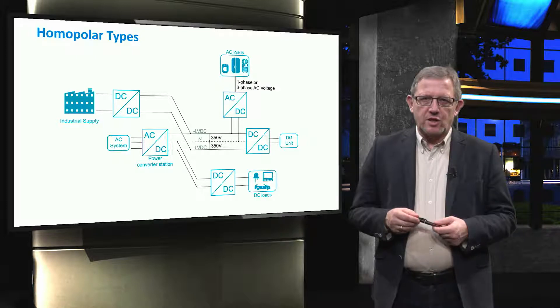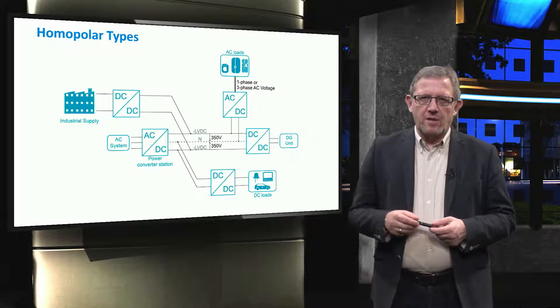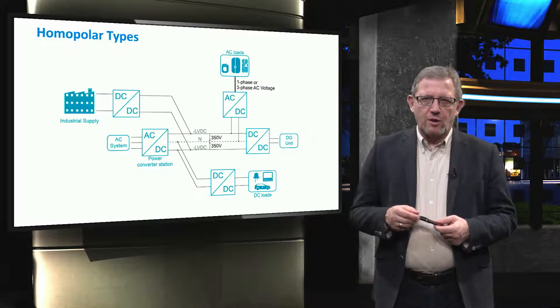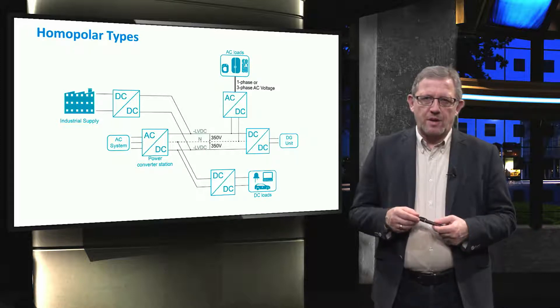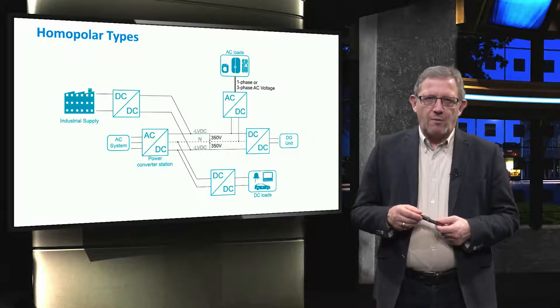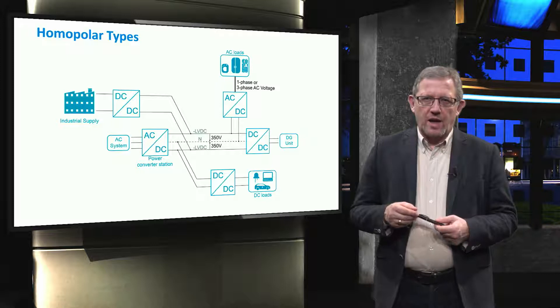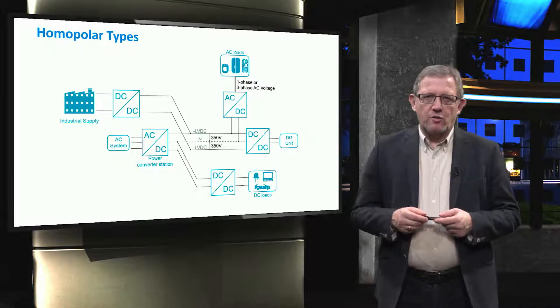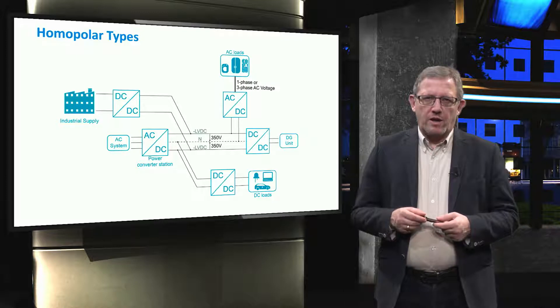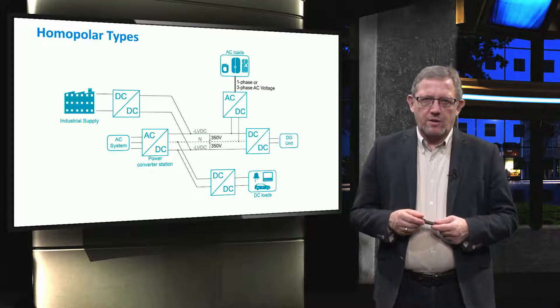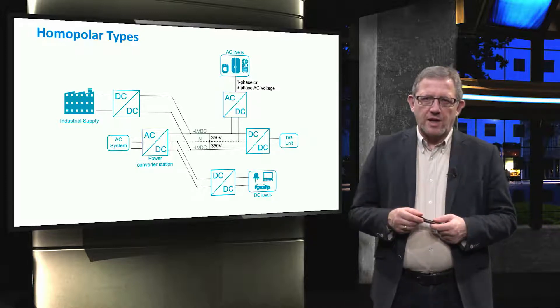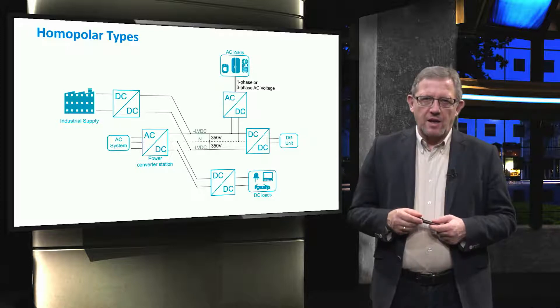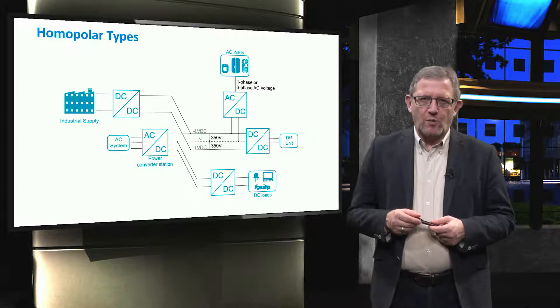Among the disadvantages, the power converter station must be more complex because the neutral line has to be accessible. The voltages are in both lines 350 volt against neutral. The neutral current will be quite high. One of the advantages of homopolar connection is reduced insulation cost and it has a higher efficiency compared to monopolar connection type.